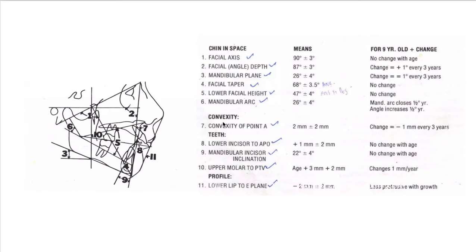Convexity of Point A is two millimeters and changes minus one millimeter every three years. In adulthood, the FH plane and nasion-pogonion (facial plane) are at a right angle, and Point A lines up with the Pogonion — they are positioned in one line. Lower incisor to A-Pogonion is very important: one millimeter, with no change with age.